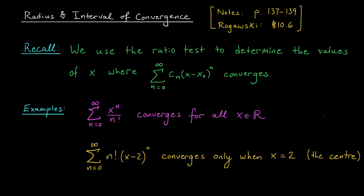The big question that we asked surrounding power series was: if you hand me a power series, for which values of x will that series converge, and for which values of x will the series diverge? By looking at a couple examples, we determined that the ratio test might help us answer this question. In our first example, we found that the limit from the ratio test was always equal to zero, regardless of what x value you started with. That means that no matter what x value you pick, this series is going to converge — and in fact, it will converge absolutely.